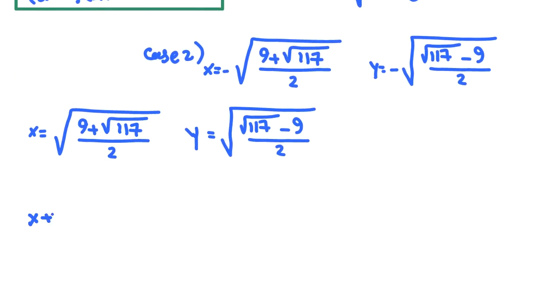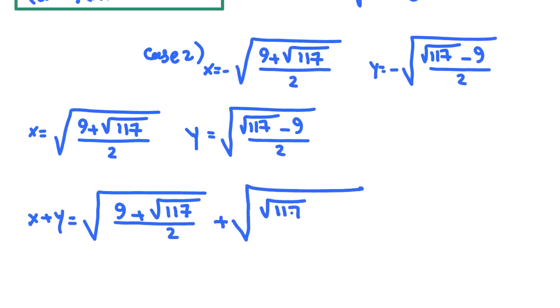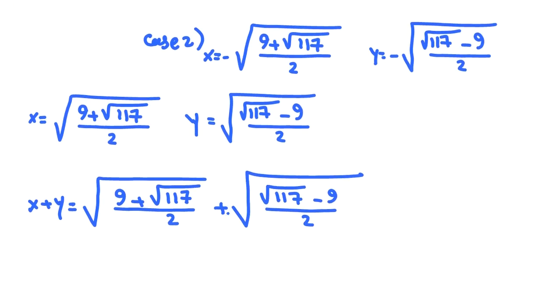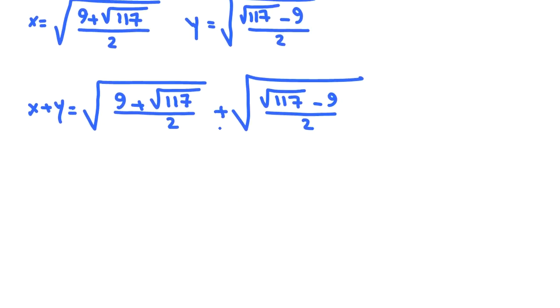If you consider x plus y, it will be square root of 9 plus square root of 117 over 2 plus square root of root 117 minus 9 over 2. When you see these types of problems and you want to get rid of many square roots we have, one useful idea is raise both sides to the power of 2. So I define it a. I want to find a.